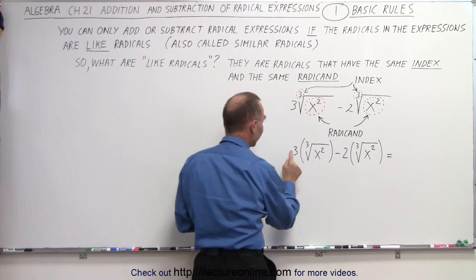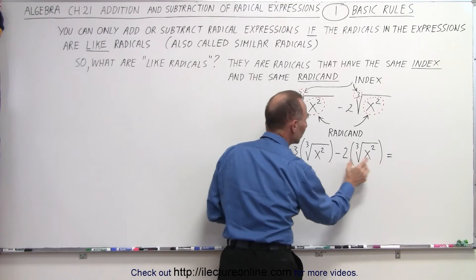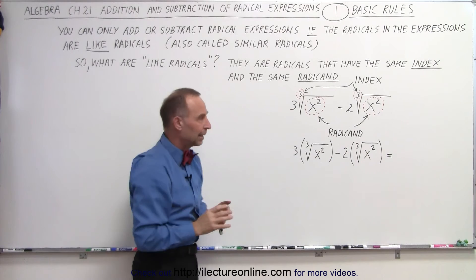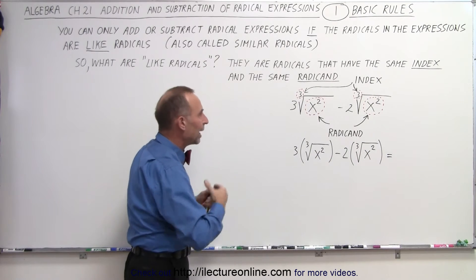So in this case, notice we have three of these minus two of these. So what's inside the parentheses? It's what makes them alike. And so those are called like radicals.